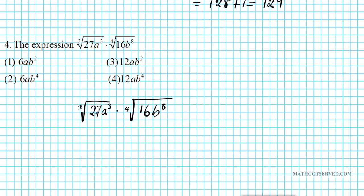If I can express these terms as the power of 3, we can then divide out and the radicand goes away. We can write this as 27a to the 3rd raised to the 1/3 power times 16b to the 8th raised to the 1/4 power.